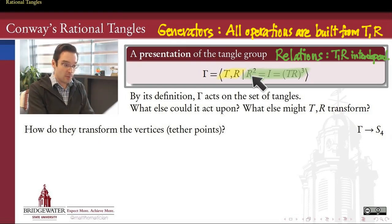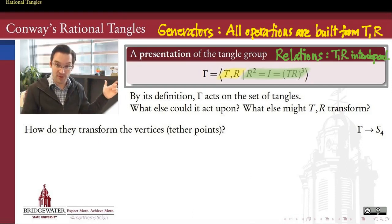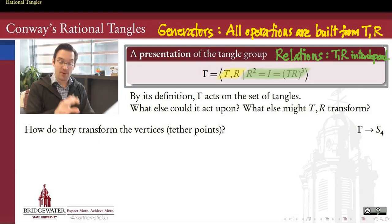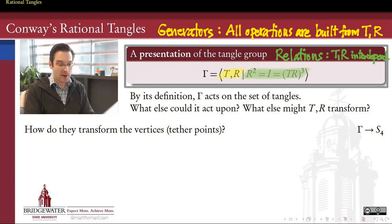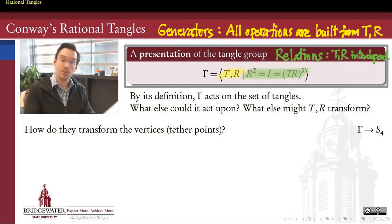This group, which I'm calling gamma, acts upon the set of tangles — each element in this group gives us a function that can turn one tangle into another tangle. If we want to understand better how to represent tangles, let's think about other sets on which this group could act. How else could we think about T and R as transforming things — not just tangles, but maybe simpler objects? First question: can we think about how this group might transform the vertices of a tangle — the tether points at the vertices of the rectangle?